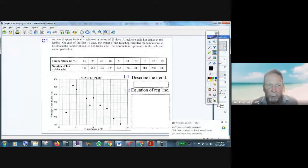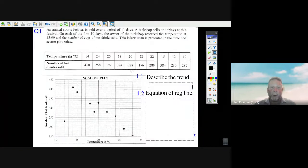We're going to look at this question from the 2020 supplementary exam. It's a regression question where they've given 11 temperatures over 11 days and how many hot drinks were sold. They put it on a scatter plot that we can look at.